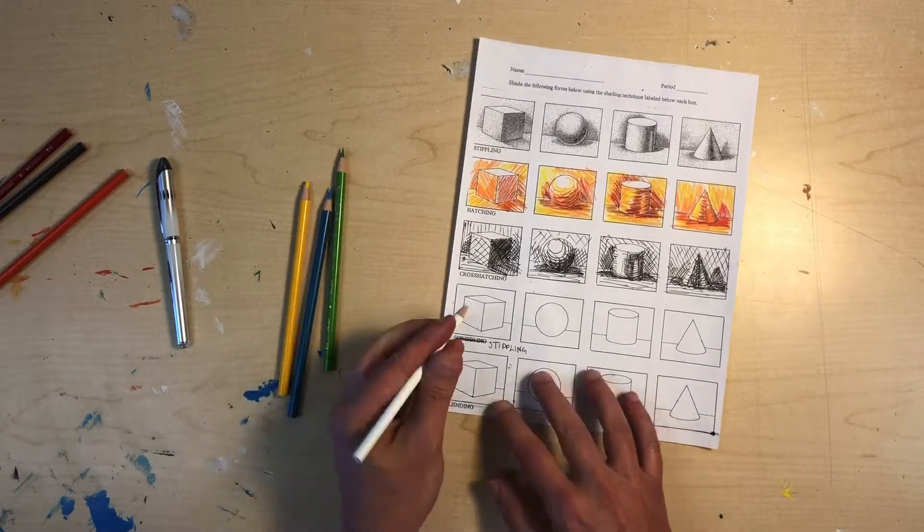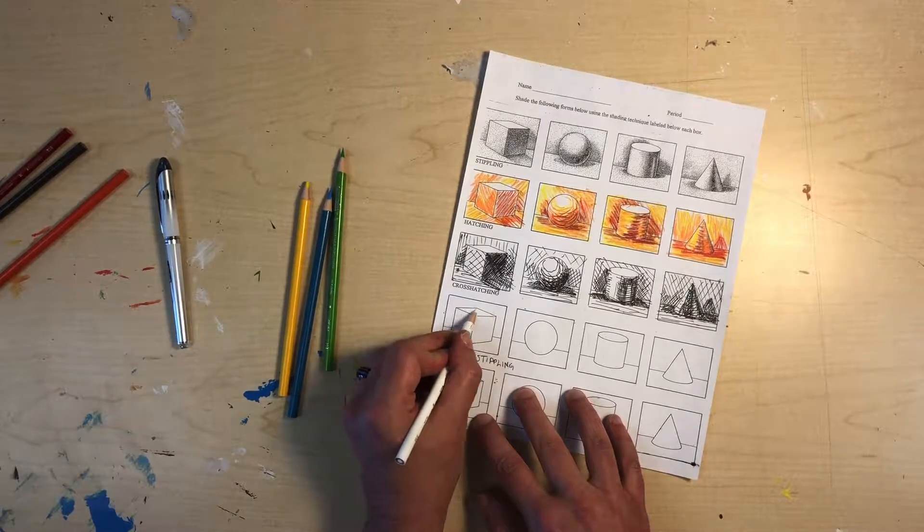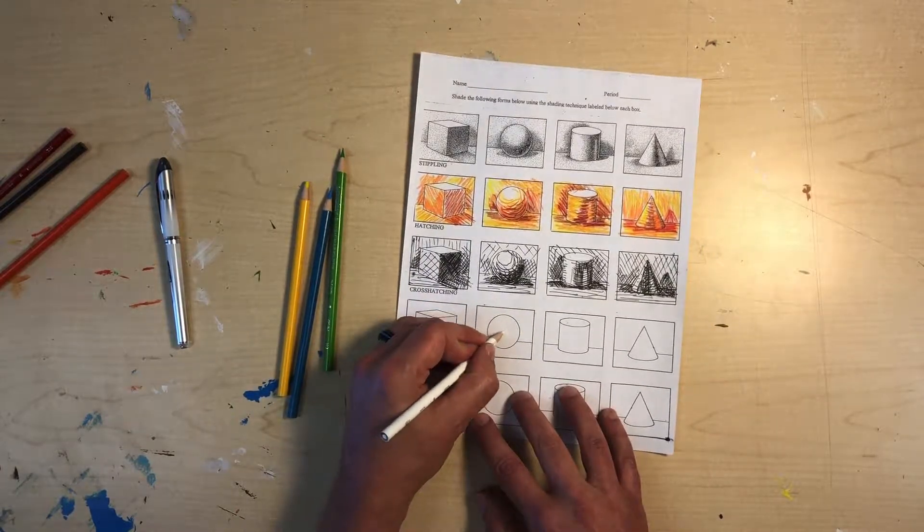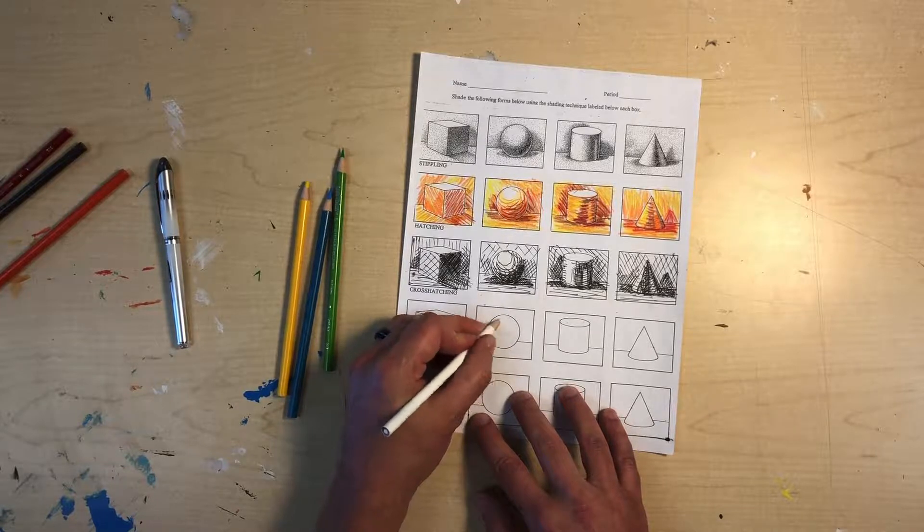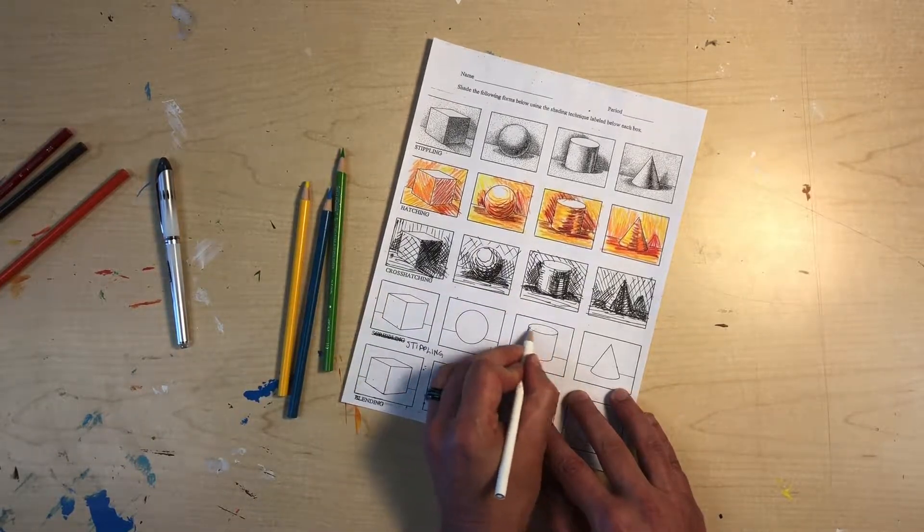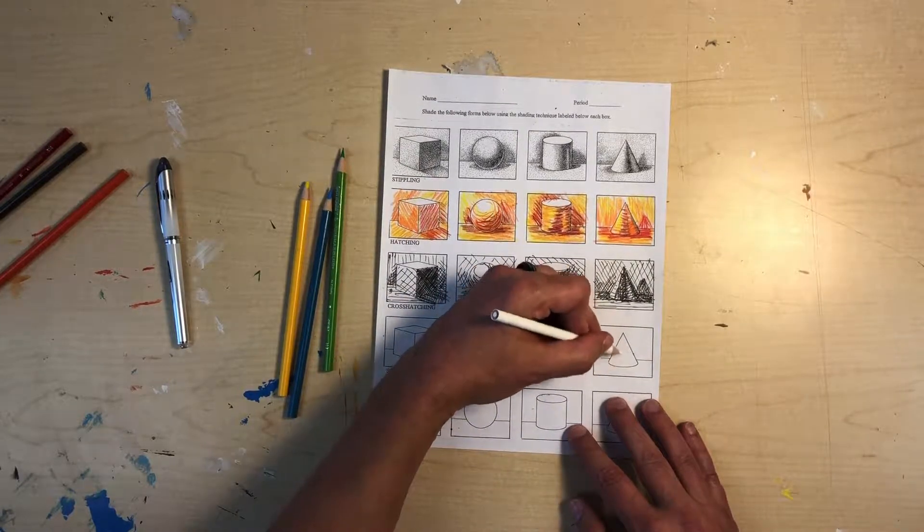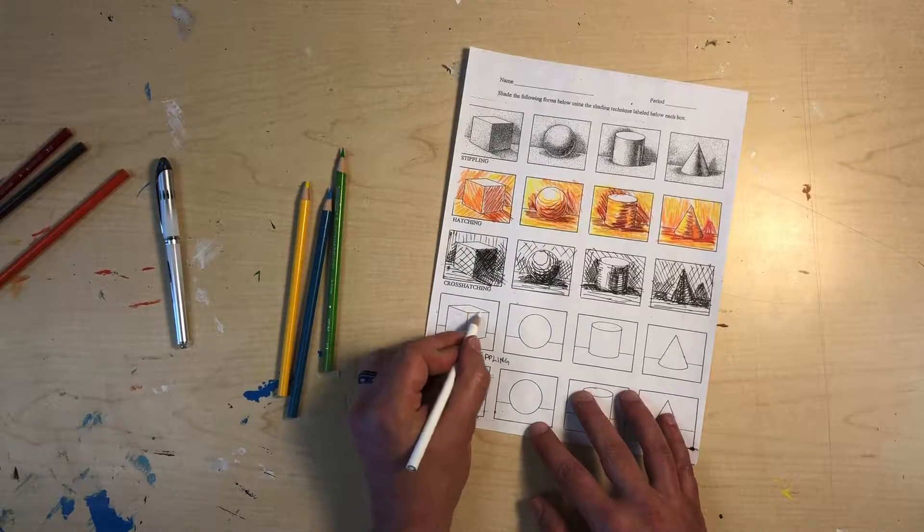I'm gonna start by just putting some white down on those highlight areas just in case I end up going into those areas by accident that I already have some of the white down. So again on the top of the cylinder here, on this side of the cone, all of those are my highlight areas on this side of the cube.